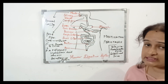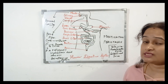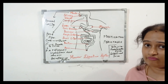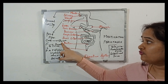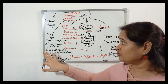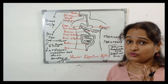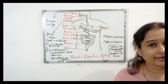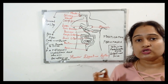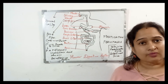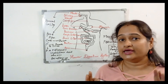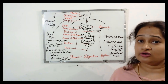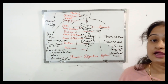The purpose of intestinal juice is to convert any remaining carbohydrates into simple forms such as glucose, any remaining proteins into amino acids, and any remaining fats into fatty acids and glycerol. Hence, in the small intestine, all food is completely converted into digested, water-soluble, simple forms.